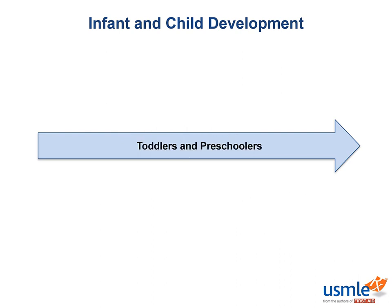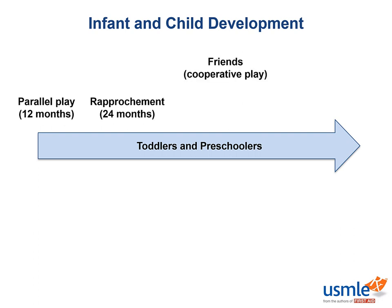A child entering the toddler age group behaves very differently. At one year, a toddler engages in parallel play. At about two years, a toddler also displays rapprochement, during which a toddler will move away from the caregiver, only to return for reassurance. At three years, toddlers start having friends and engaging in cooperative play, as well as freedom, in that they can spend part of the day away from the caregiver. Around this age, it is thought that they also develop a core gender identity.